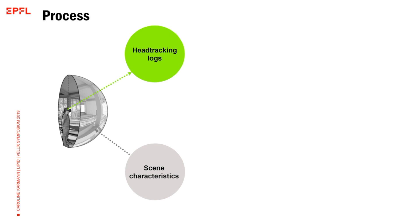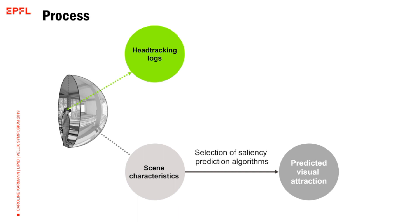This was the starting point of my research. I had the scenes and the logs, and from there I started looking at the literature on how to model saliency — a new term meaning what is most prominent in a scene, what is basically attracting us. The fields of vision science and computer science have had roughly 20 years of research on this, making it very interesting to explore what we can transfer to building science and architecture.